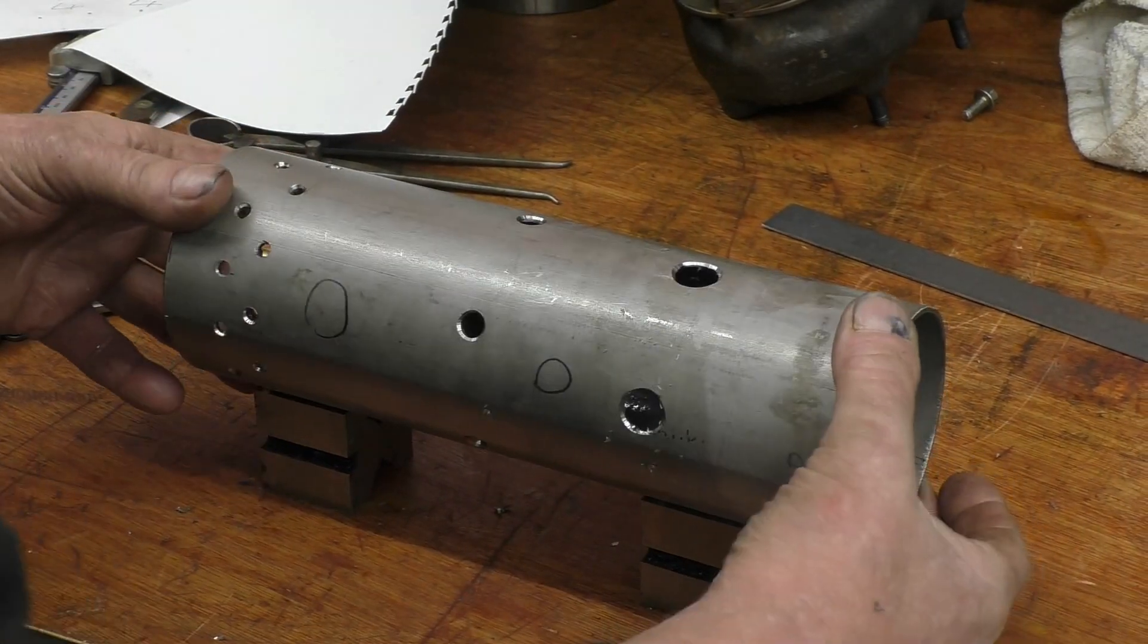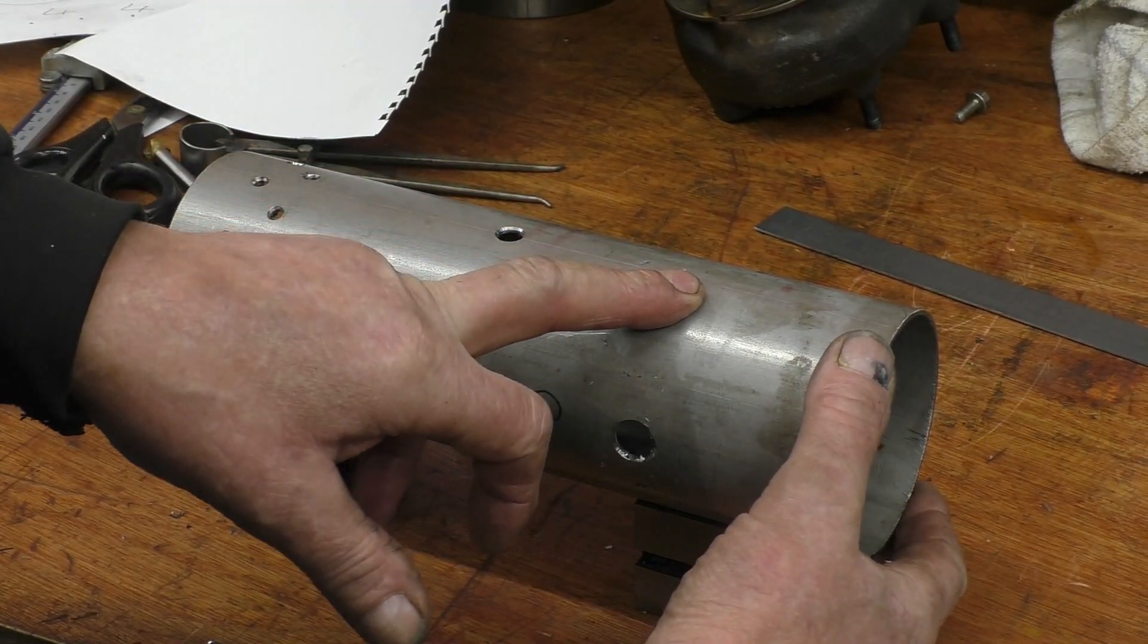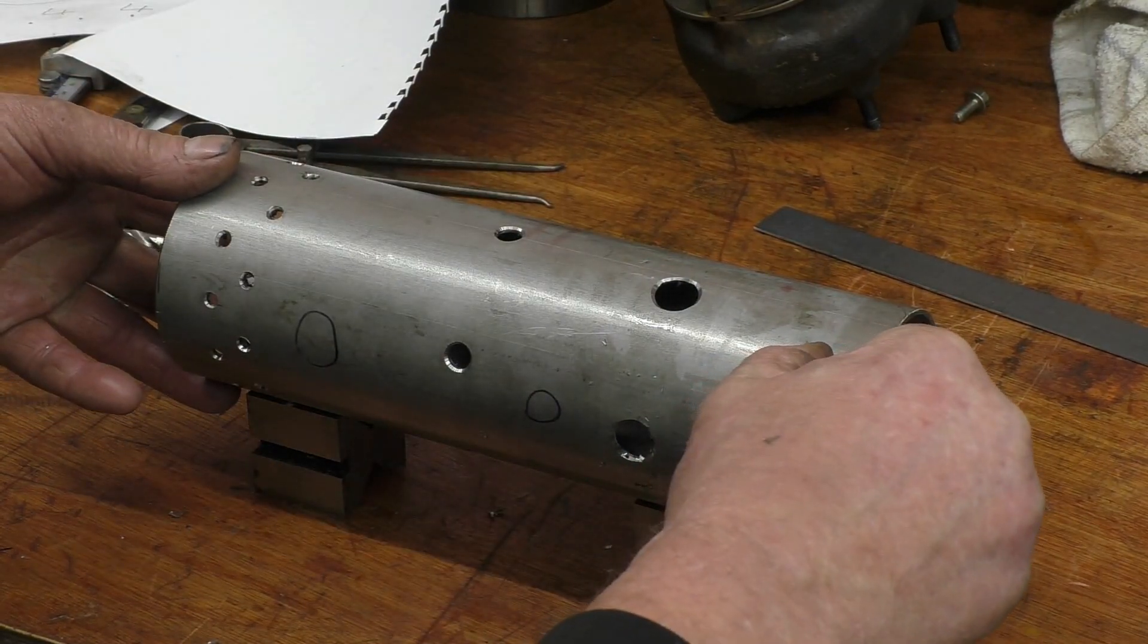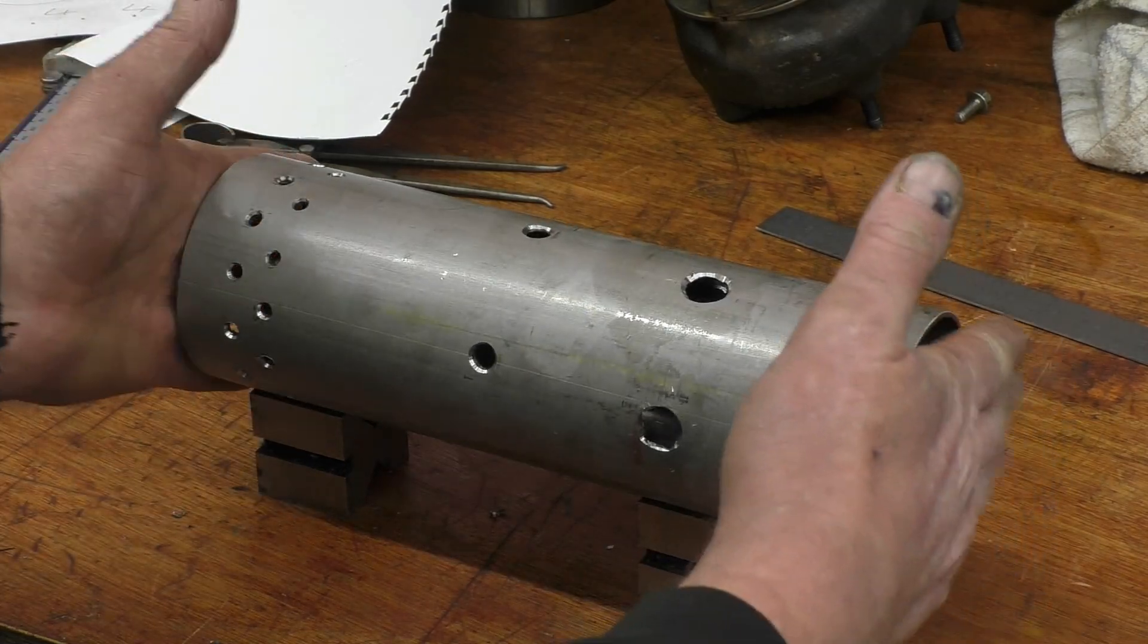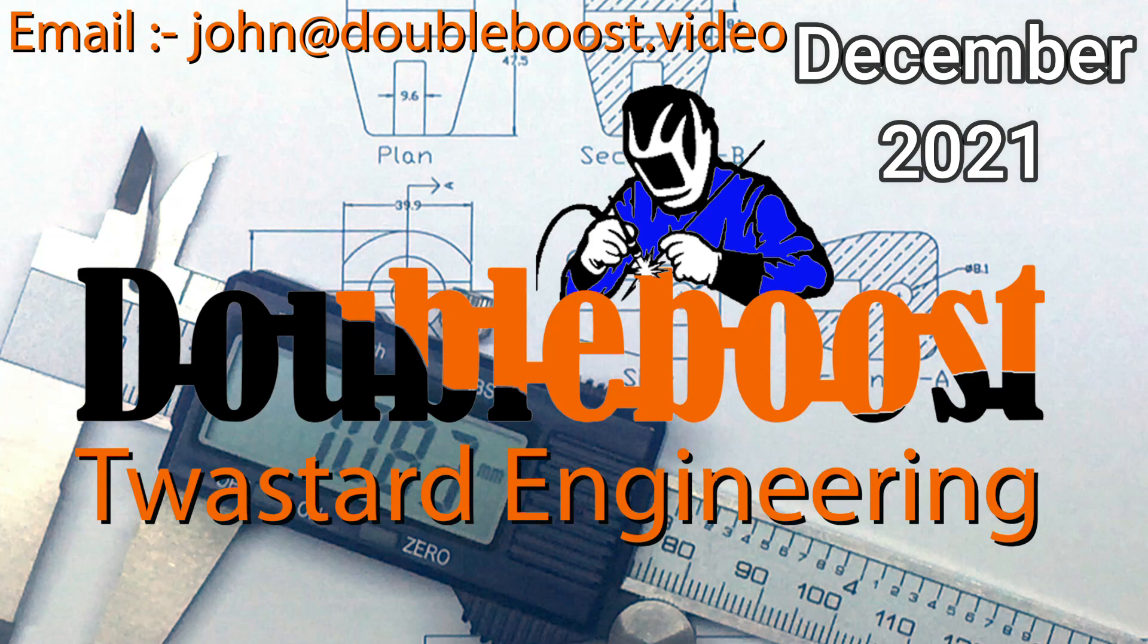Alright, that's basically the flame tube done. Primary, secondary, dilution holes or tertiary holes. There's a little bit to cut off the end of here, and we've got some flanges and things to make and some welding to do.